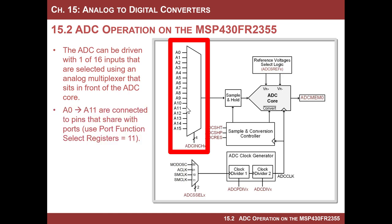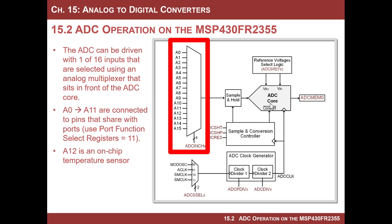A0 to A11 are connected to pins on the MCU that use the port function select registers. The port function select register setting for the analog inputs is always one, one — you have to dig through the device-specific data sheet to find that. A12 is actually an on-chip temperature sensor, which is neat because you can just use the MCU as a temperature sensor.